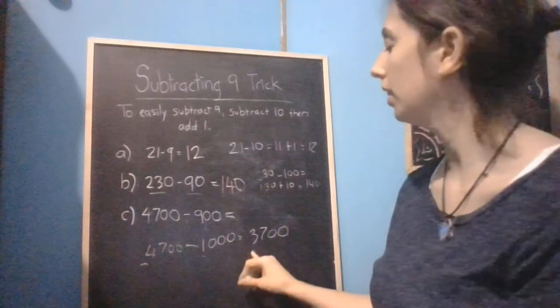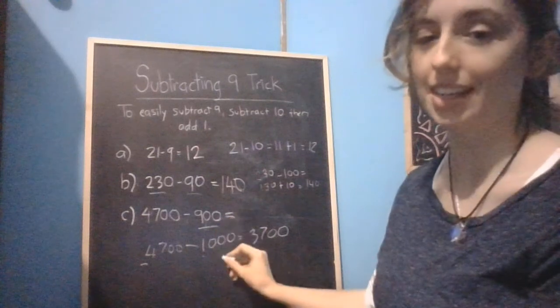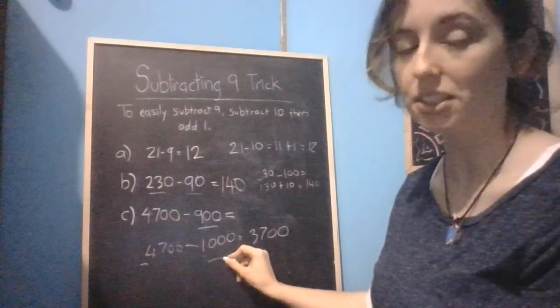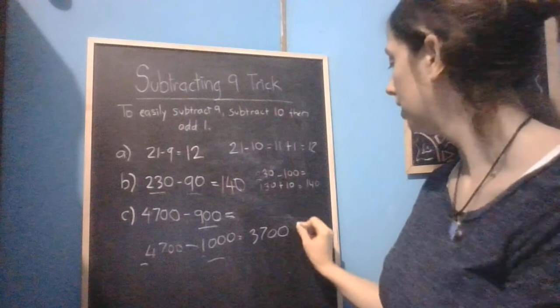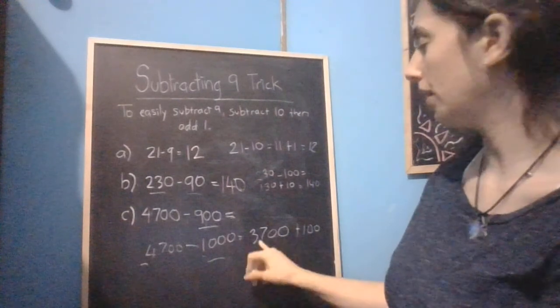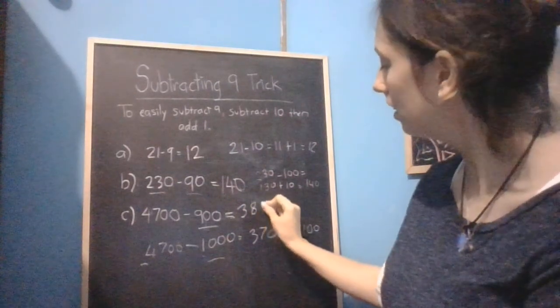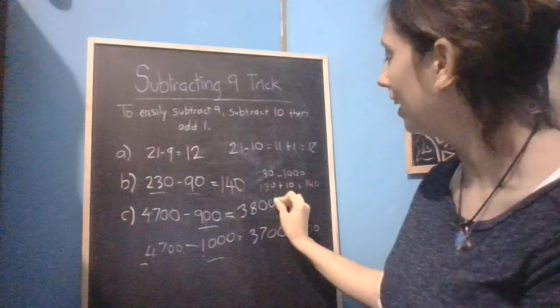So what we're going to do now is because 900 is 100 less than 1,000, we need to add 100 back onto our answer. So 3,700 plus 100 gives us 3,800. So 3,800 is our answer.